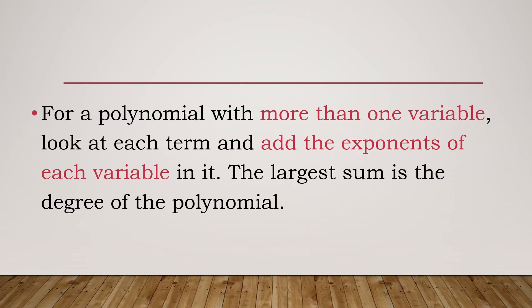Now, what if there is more than one variable? We look at each term and add the exponents of each variable in it. Whichever term has the highest sum of exponents — that sum is the degree of the polynomial.